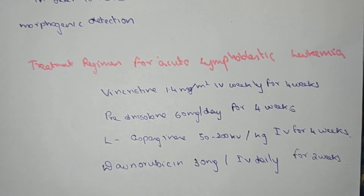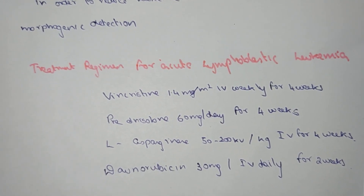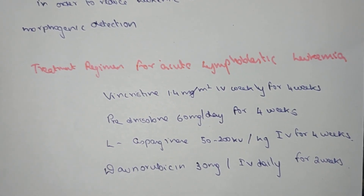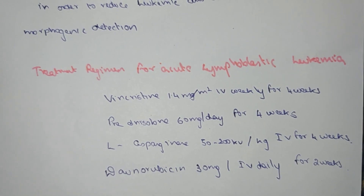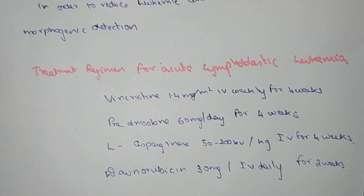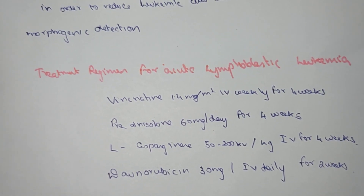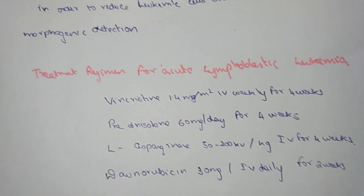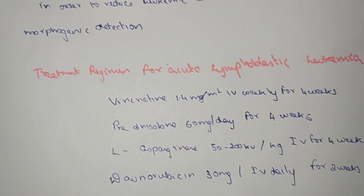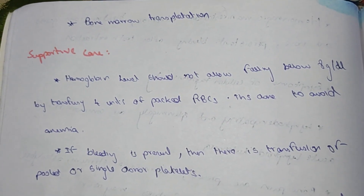The treatment regimen for acute lymphoblastic leukemia includes: vincristine 1.5 mg IV weekly for four weeks; prednisolone 60 mg per day for four weeks; L-asparaginase 50 to 200 KU/kg IV for four weeks; and daunorubicin 30 mg IV daily for two weeks. Bone marrow transplantation is also a treatment option.